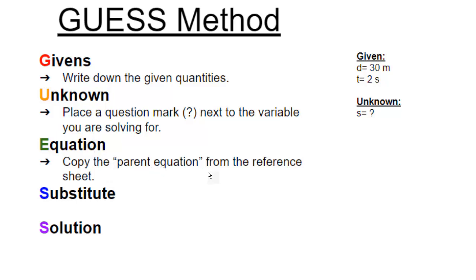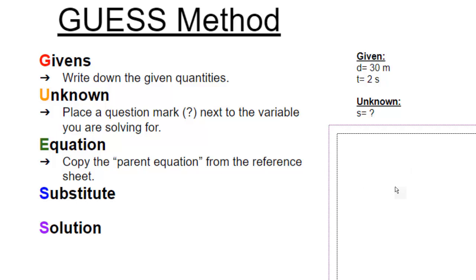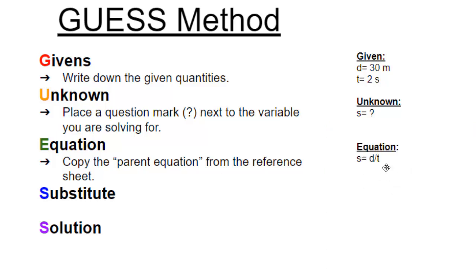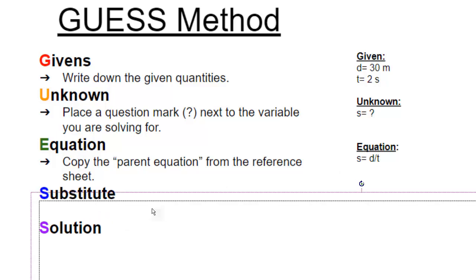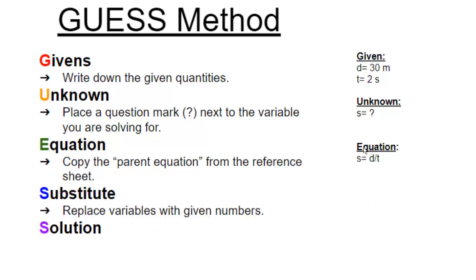The E is for Equation, which makes sense. You literally just copy it from the reference sheet — the yellow sheet we give you on all your quizzes and tests. Just write it down; don't try to memorize it so you don't make mistakes. Then Substitute: you take the equation and substitute the givens, putting the numbers into the variables and rewriting the equation exactly but with the numbers in there.